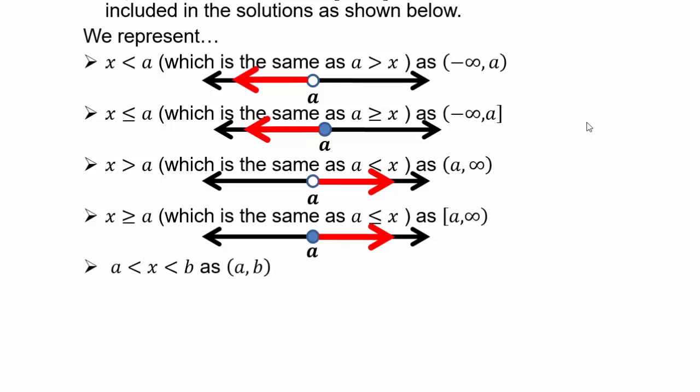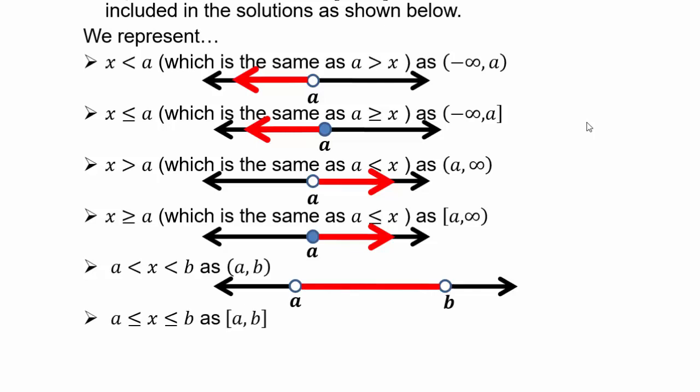If a is less than x and x is less than b, that means your numbers are simultaneously bigger than a but smaller than b. You write that as open parenthesis a, comma, open parenthesis b. A and b are excluded but everything between a and b is included. For a less than or equal to x less than or equal to b, both endpoints are included, so you use square brackets.